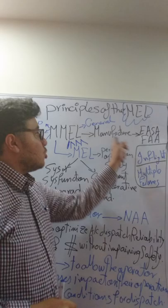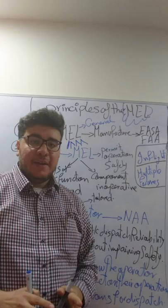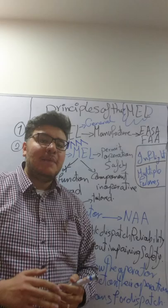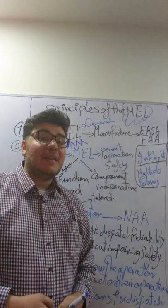The Master Minimum Equipment List is approved by the authority with which the manufacturer is based. For example, if the manufacturer is Airbus or Boeing, the Master Minimum Equipment List will be approved by the EASA or the FAA. So this is a general MEL, which is called the Master MEL or Manufactured MEL.